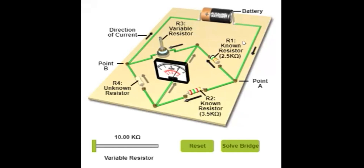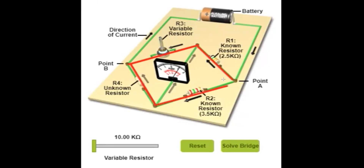Hello friends. This is a Wheatstone bridge circuit. It contains four resistors: R1, R2, R3, and R4. These four resistors are arranged in the form of a quadrilateral, one resistor on each side of the quadrilateral.